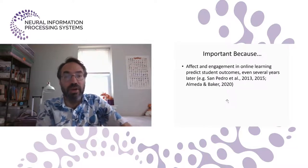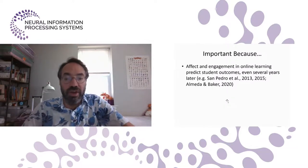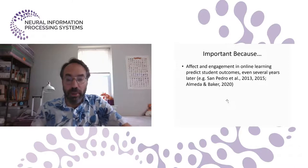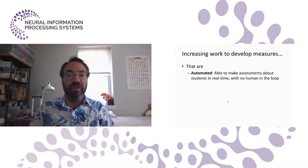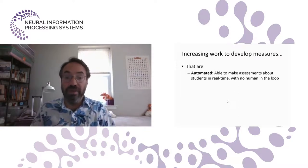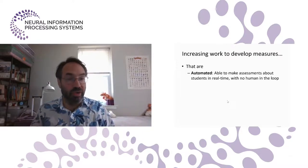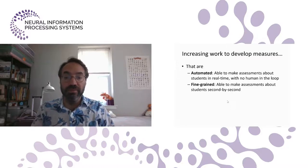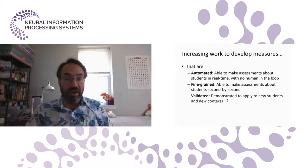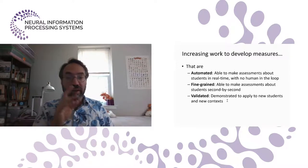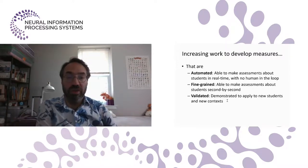Now, this is important because affect and engagement in online learning predicts student outcomes, even several years later. And because of that, there's increasing work to develop measures that are automated, able to make assessments about students in real time with no human in the loop, fine-grained, able to make assessments about students at a second-by-second level, and validated, demonstrated to apply to new students and new contexts.